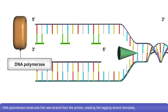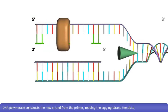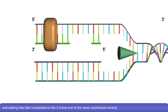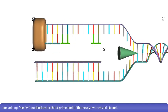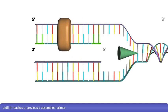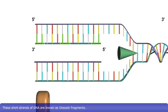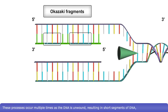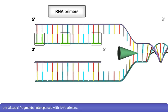DNA polymerase constructs the new strand from the primer, reading the lagging strand template, and adding free DNA nucleotides to the 3' end of the newly synthesized strand, until it reaches a previously assembled primer. These short strands of DNA are known as Okazaki fragments. These processes occur multiple times as the DNA is unwound, resulting in short segments of DNA — the Okazaki fragments — interspersed with RNA primers.